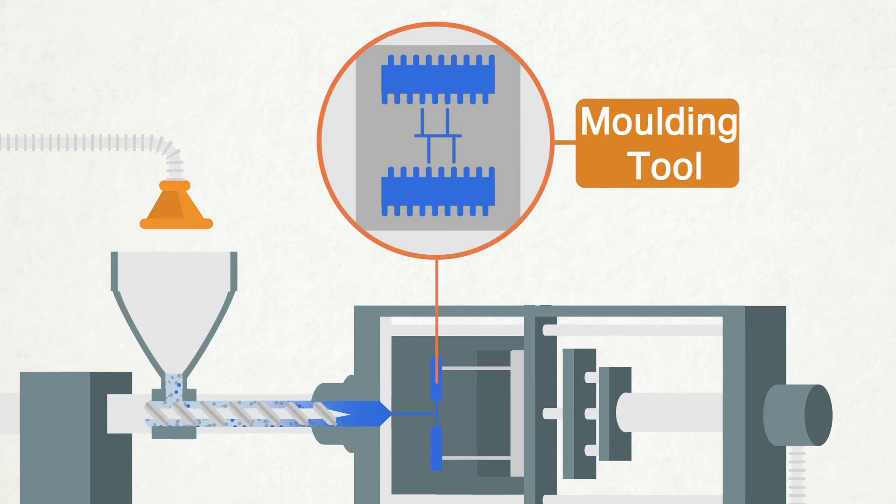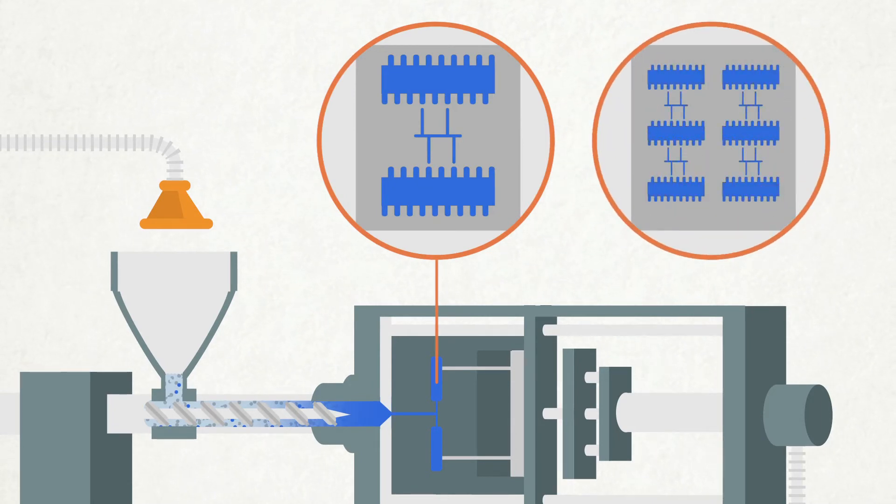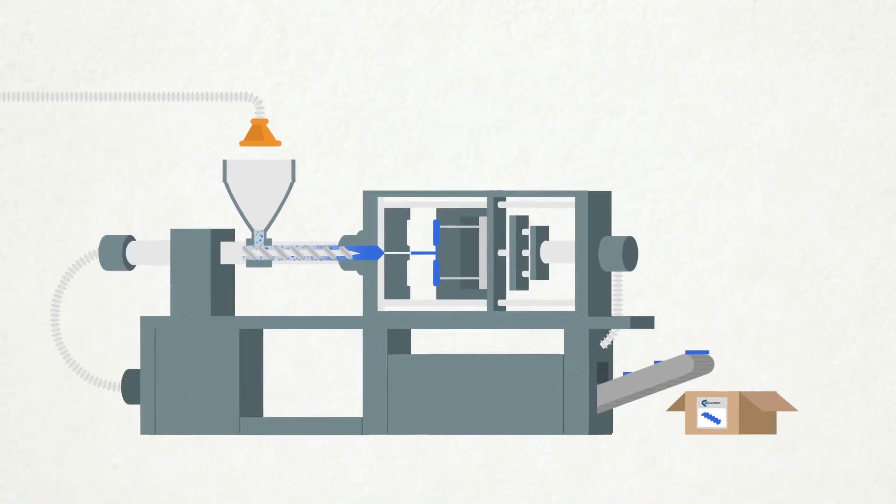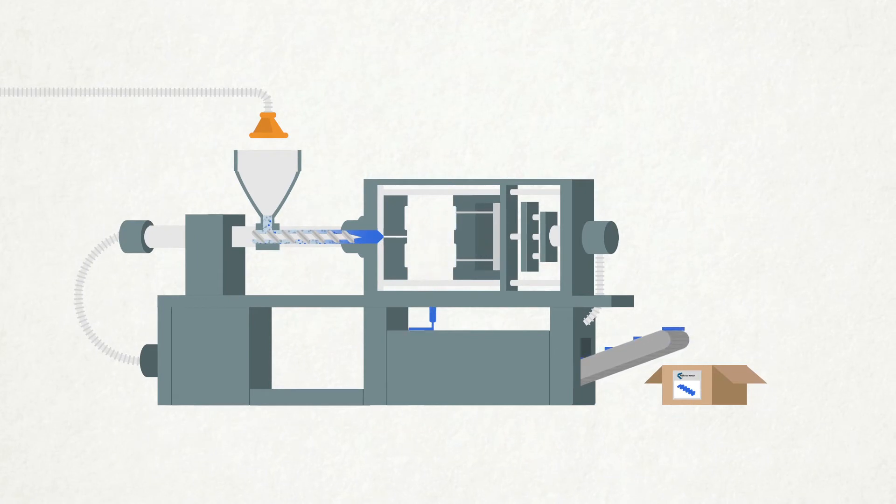Each product requires its own tool. For injection molding, a precision-made tool, complete with cooling channels, is essential to the entire process. The plastic mass solidifies inside the tool. The entire molding process can last from a few seconds to several minutes, depending on the size and the complexity of the item being made.